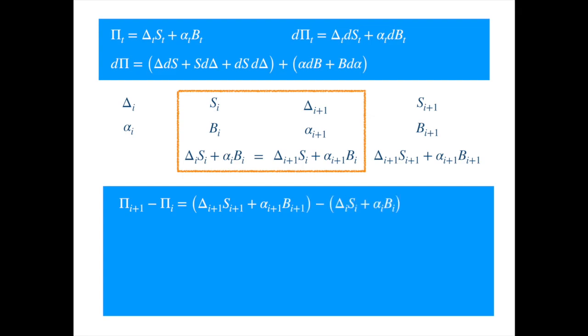Let's calculate the change in the value of our portfolio in one generic step. The value at each step is just the number of units times the price. From the self-financing assumption, we can substitute the rebalanced units at the ith step.